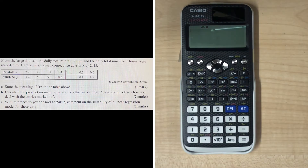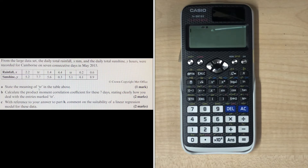For part A, TR is interpreted as trace, which means a small amount. For part B, to get the first mark you write: take TR to be zero, because TR represents a small amount.